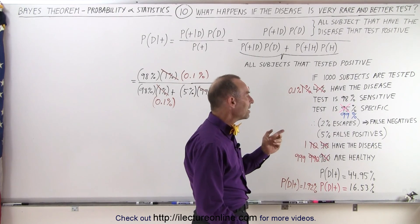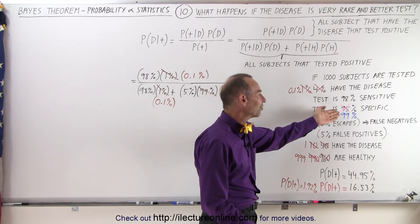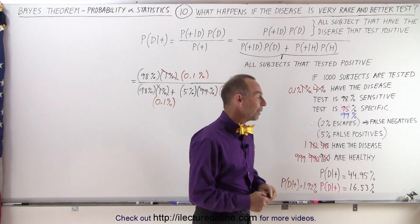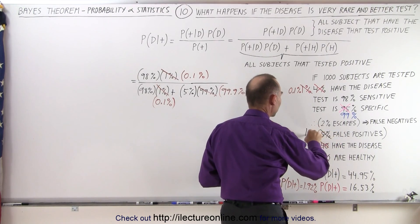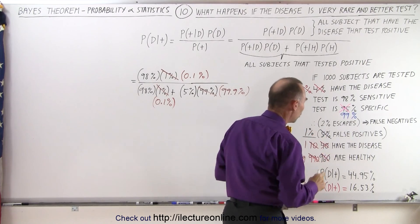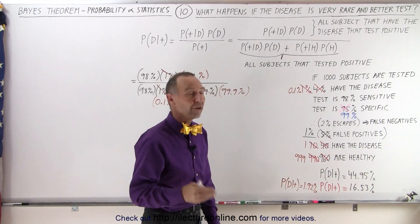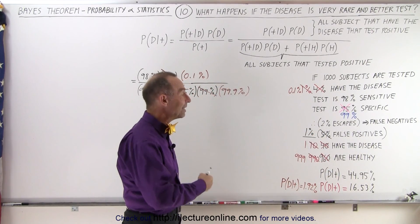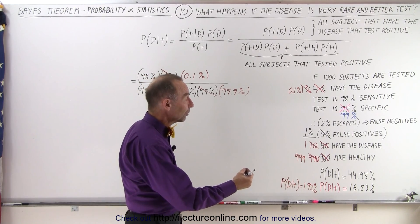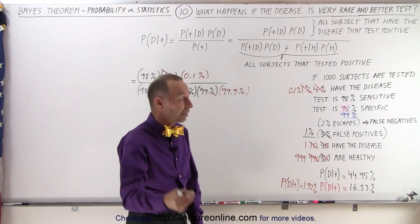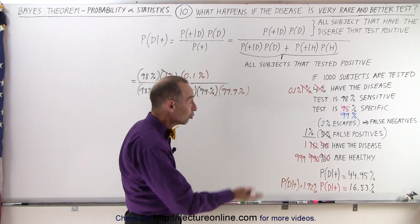What does that mean? Well that means that instead of having a five percent false positive rate, that now drops to just one percent false positive rate. So now we have just one percent, one in a hundred tested, has a false positive. Does that increase the probability that if someone does test positive, they have the condition? Well that should increase.